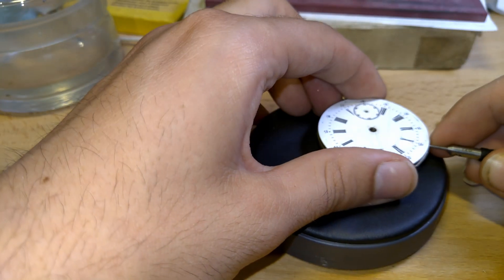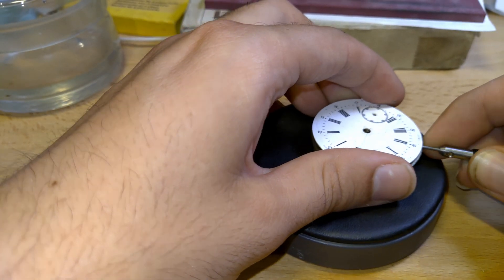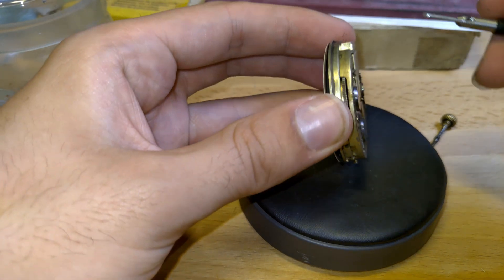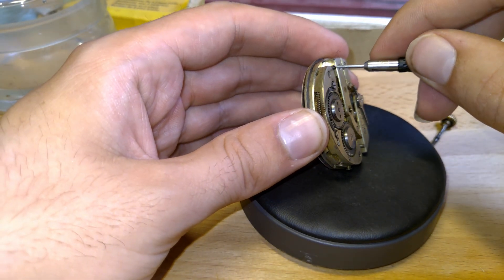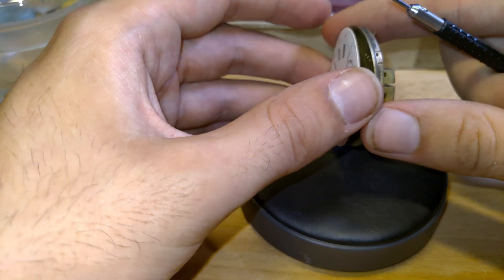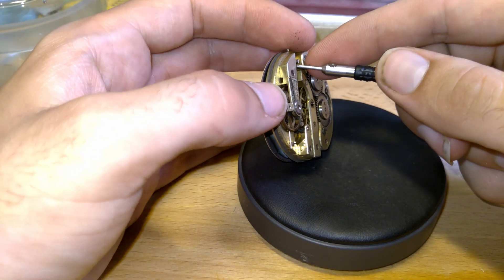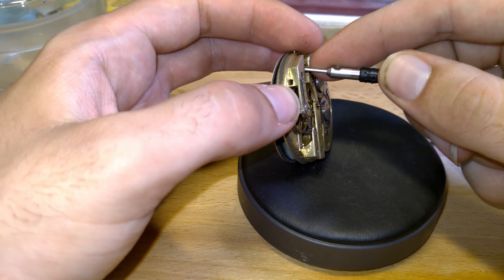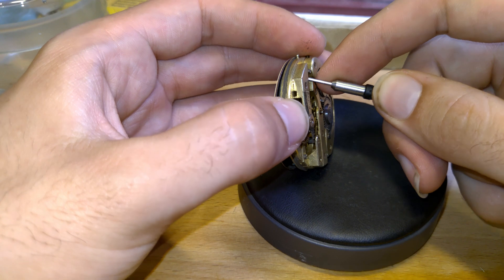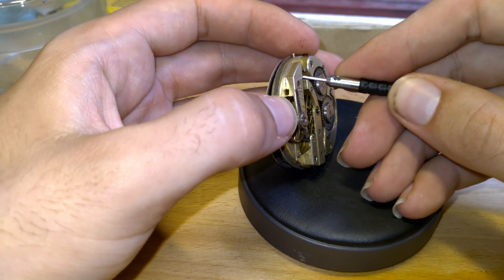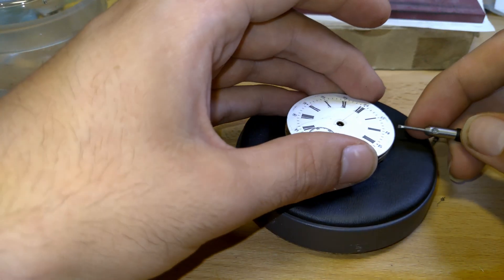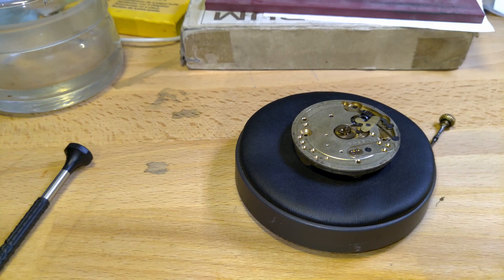So I'm gently going around the movement. This dial feet is putting in some resistance. A lot of the times they are bent a bit, so just pushing them out is a good option. Some people really tighten their screws a lot, making it so that the feet get bent a bit so they don't want to get out. And there we have the dial off.